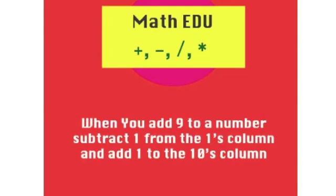Now there is one exception to that rule, and that's when there's a 0 in the 1's column. In that case, you just replace the 0 with a 9 and leave the 10's column alone. Let's take a look at an example.